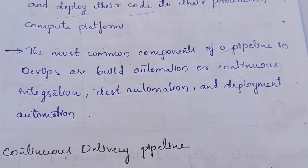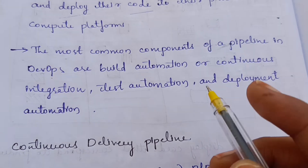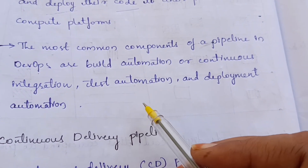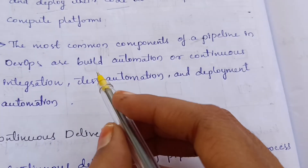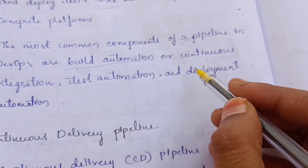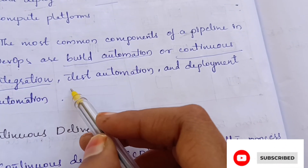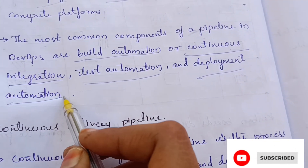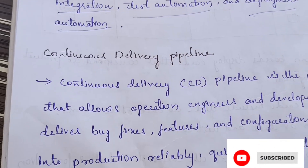The most common components of a pipeline in DevOps are: build automation or continuous integration, test automation, and deployment automation. These are the most common components of your DevOps pipeline.